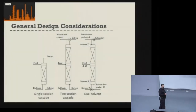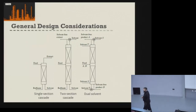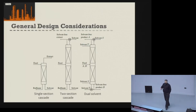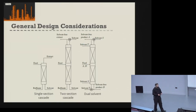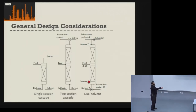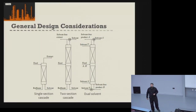Moving on to general design considerations for liquid-liquid extraction systems. What we've been using in the Hunter-Nash method is what's called a single-section cascade system — a feed coming in at the top, a solvent added at the bottom, an extract coming out near the feed end, and a raffinate coming out near the solvent end. This is essentially the simplest version of liquid-liquid extraction.